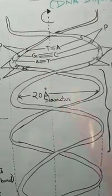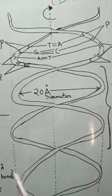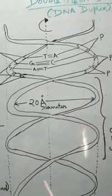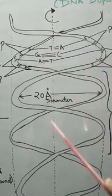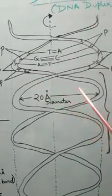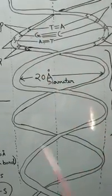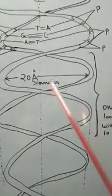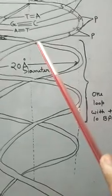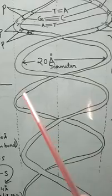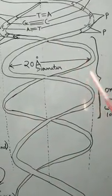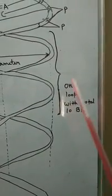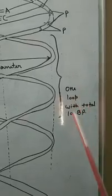Point number one: there are two polynucleotide chains which are wrapped around each other like a spiral staircase or a coil about an imaginary axis that runs in between those two polynucleotide chains. This is the imaginary axis that is running, and these are the two polynucleotide chains of DNA which are wrapped like a spiral staircase. Point number two: this is a single loop, and one single loop will have 10 base pairs, or 10 nucleotides, or 10 nitrogenous bases.